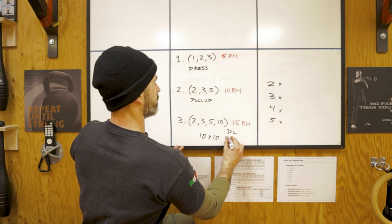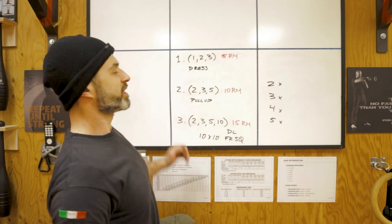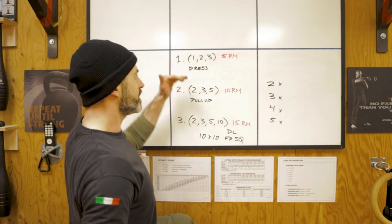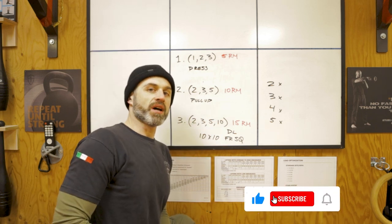DL, front squat. That way, within the same session you have a heavy push, a medium pull, and a light lower body exercise.